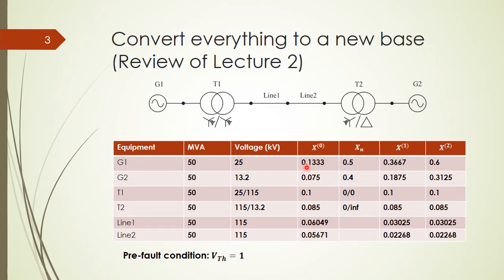The zero sequence impedance is given, and together with it we have the connection between the neutral and the ground, with values for Z2 and for transformer 1 and transformer 2. For transformer 1, the Y-to-Y configuration has the neutral connected to ground, so the zero sequence short circuit between neutral and ground is zero for both primary and secondary sides. For transformer 2, only the primary side has the neutral-to-ground connection; the secondary side is delta, so it is not connected to ground, and therefore the reactance there is infinity.